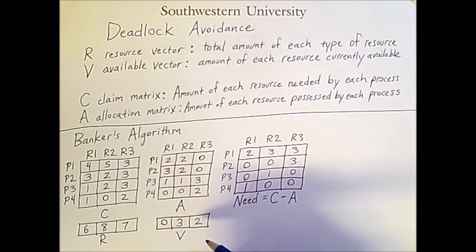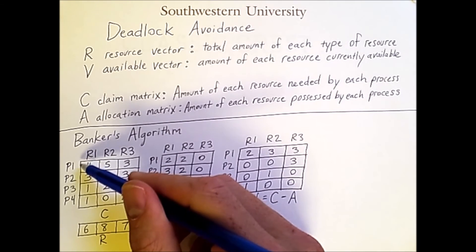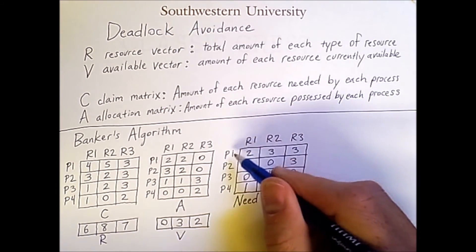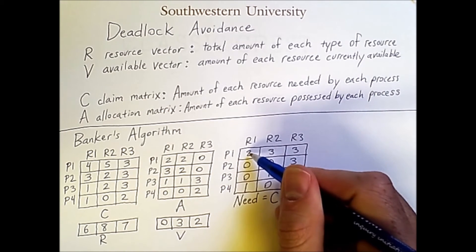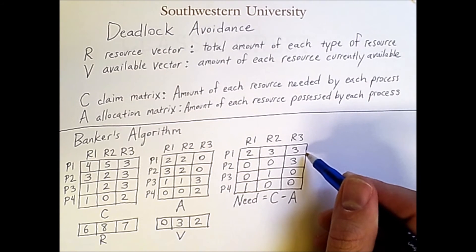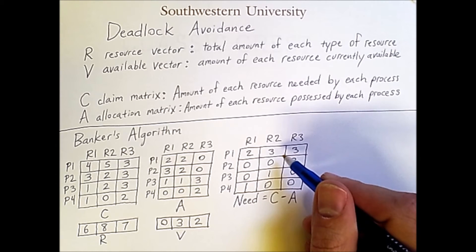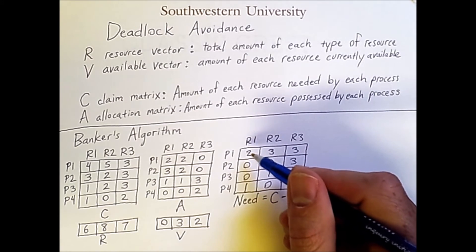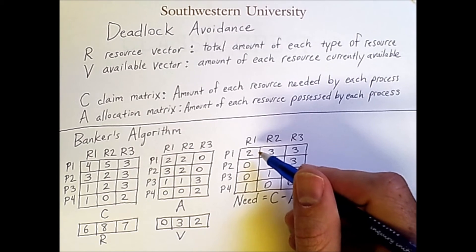Additionally, if we can find a way to execute all of these processes in sequence, assuming that every completed process returns its claimed resources to the system, then that means we can execute all the processes and avoid deadlock. So first, we'll consider row 1 for process 1. Process 1 still needs 2 units of resource 1 to finish. There are 0 units of resource 1 available, therefore we cannot execute process 1. It might run for a few steps if we attempted to execute it, but eventually it would attempt to claim those resources, which would lead potentially to deadlock.